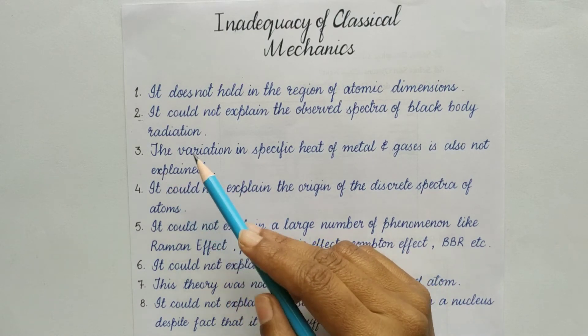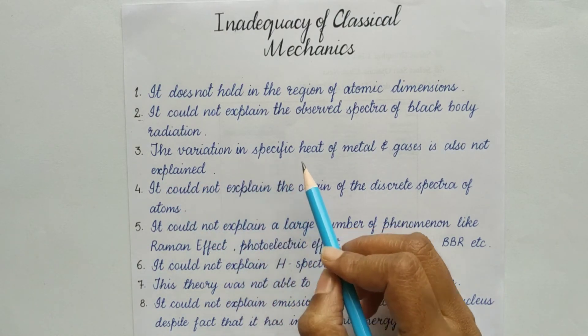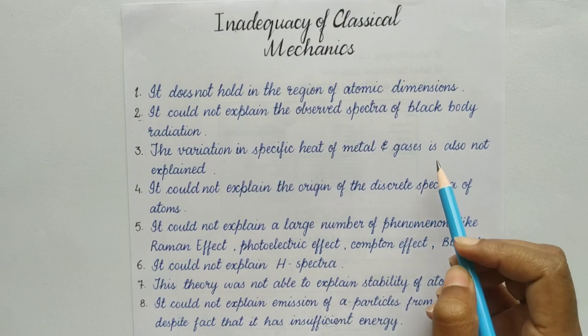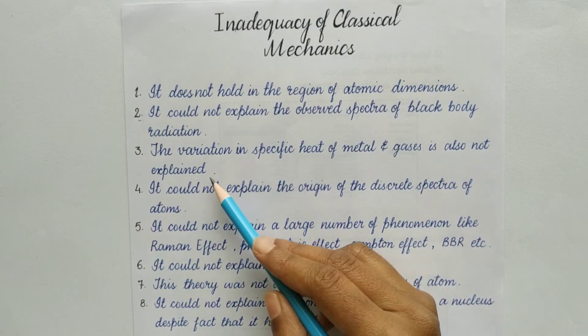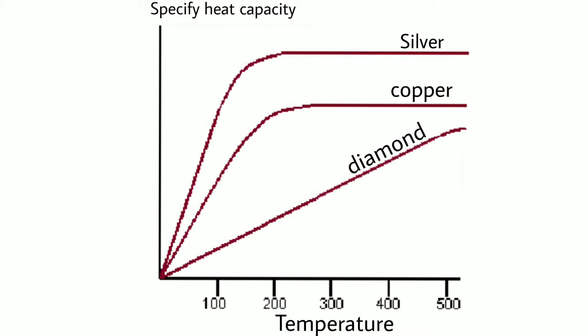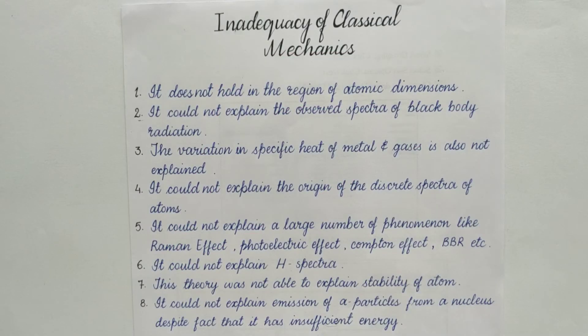Number three, the variation in specific heat of metal and gases is also not explained. The variation that was seen in the specific heat of metal and gases was also not explained by it. This video is based on the points, so we are not going in the deep explanation.